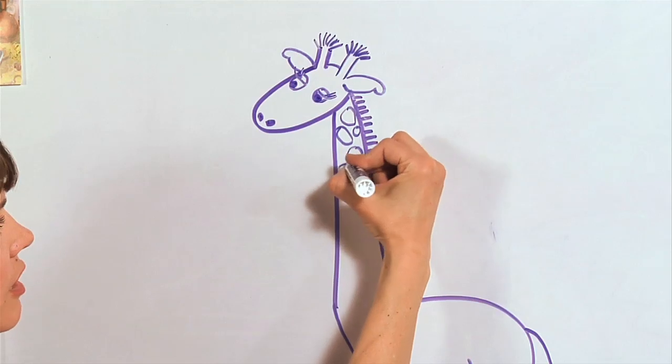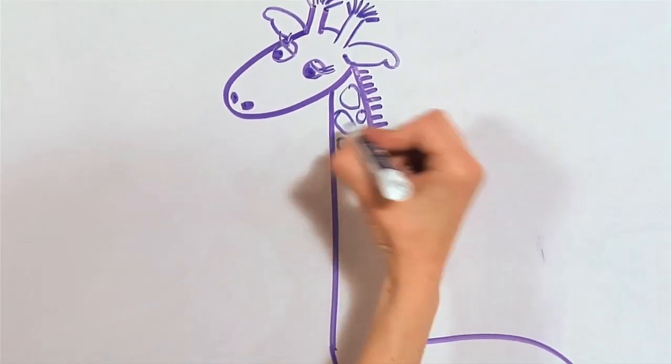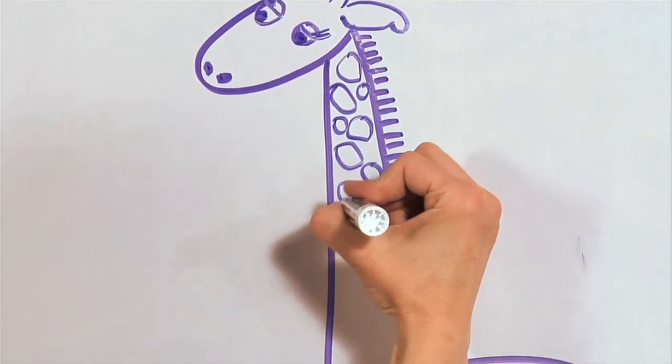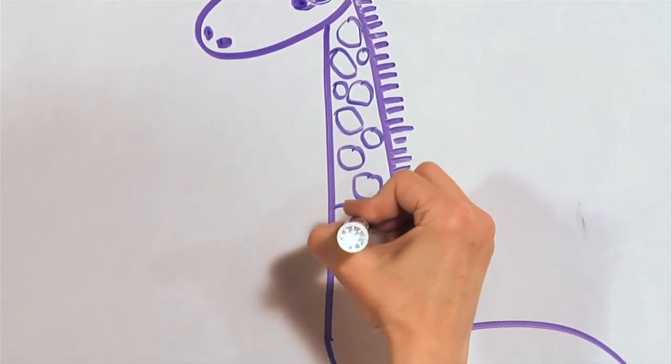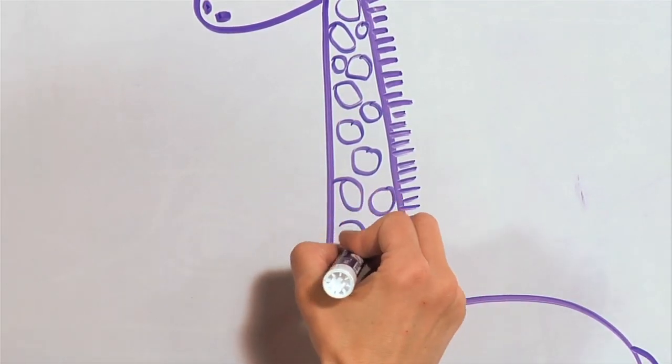So I'm going to do kind of a big one here and a big one here, and then I'll notice I have a space, and I'll just fill it in. So I'll kind of do some bigger spots like this. And they can get a little bit bigger as they get to the giraffe's back.